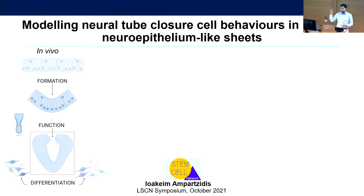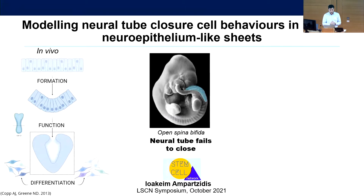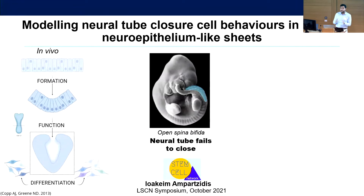This has two main functions: one is the closure itself of the neural tube, but also the differentiation of the different types of neurons. Failure in any of these stepwise processes results in a physical gap and failure of neural tube closure. This gives rise to a spectrum of disorders termed neural tube defects, or NTDs, which have a prevalence rate of one in 1,000 pregnancies.